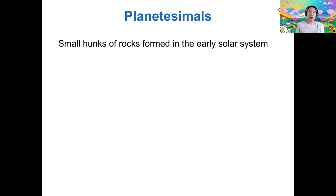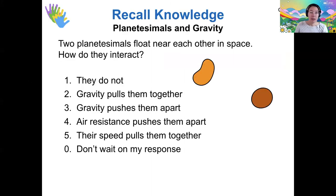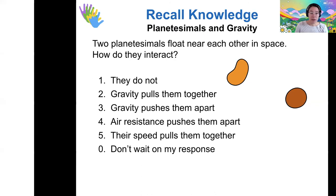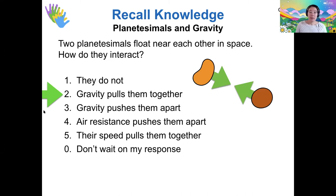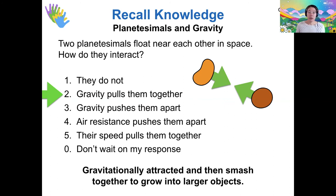How did planetesimals and planets form from just the bits of material that condensed out in the solar disk? Planetesimals are the small chunks that start to agglomerate from those bits of condensed material. When two planetesimals are near each other in space, gravity pulls them together. There's a gravitational force between every two objects, and as planetesimals are gravitationally attracted to each other, they smash together, stick together, and over time attract more planetesimals, growing into larger and larger proto-planets.